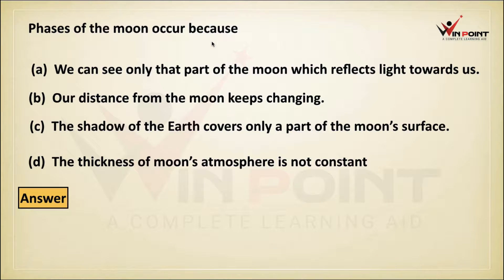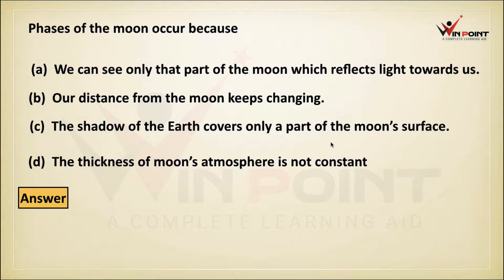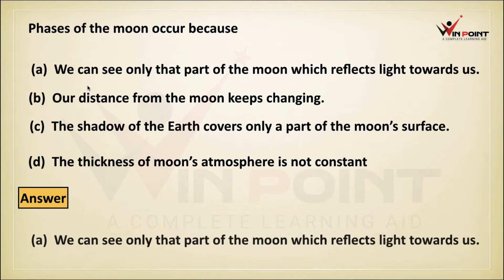Phases of the moon occur because: we can see only that part of the moon which reflects light towards us; our distance from the moon keeps changing; the shadow of the earth covers only a part of the moon's surface; the thickness of moon's atmosphere is not constant. The answer is: we can see only that part of the moon which reflects light towards us.